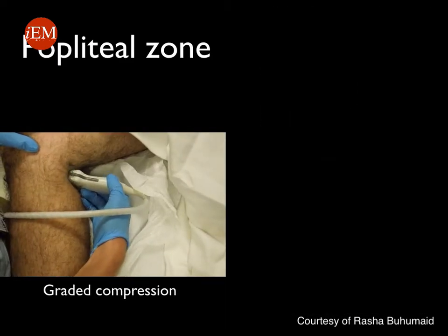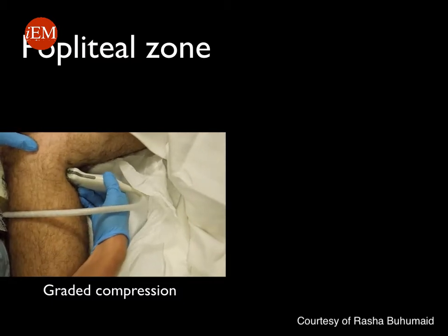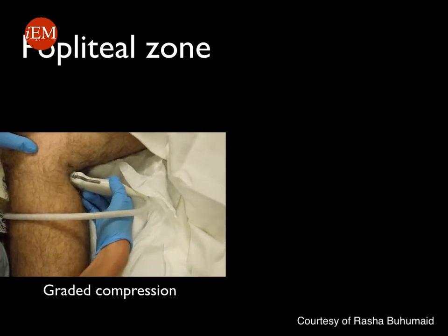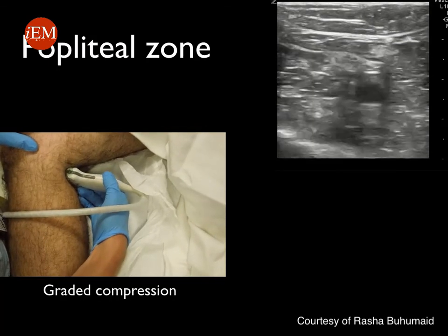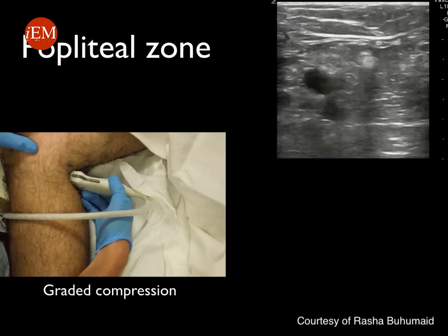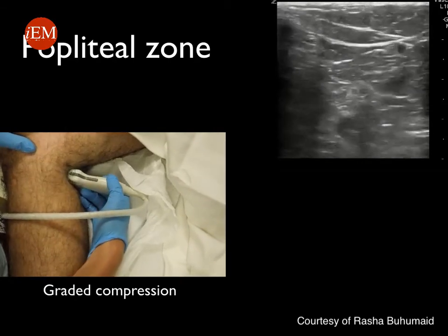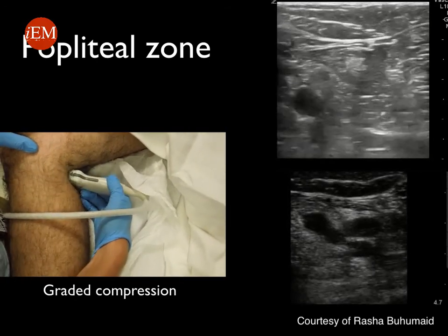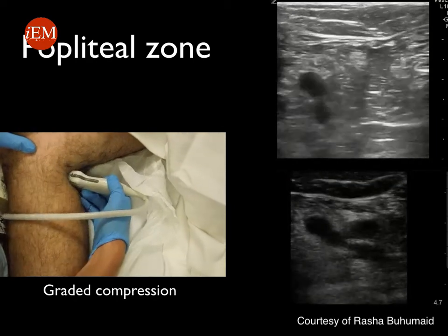At the level of the popliteal fossa, the popliteal zone is evaluated by placing the probe in a transverse plane with the probe marker towards the patient's right. You can see the sonographer performing graded compression, applying pressure to ensure the walls of the vein are collapsible, which rules out DVT in this area. It's important to follow the popliteal vein until it trifurcates — all three trifurcation branches are demonstrated and shown to be nicely compressible.